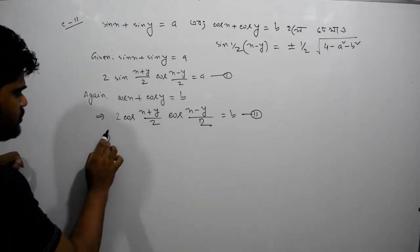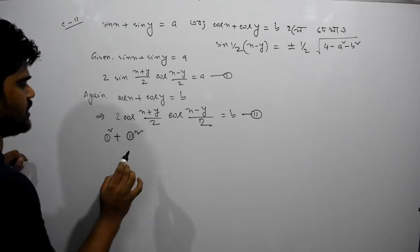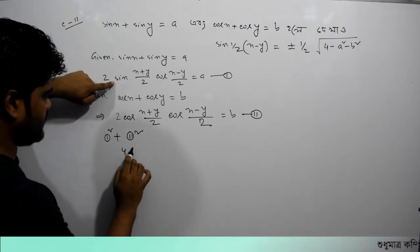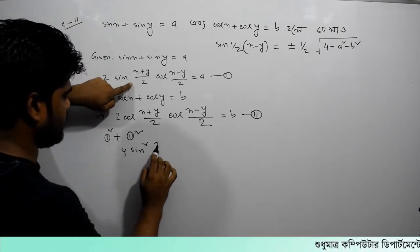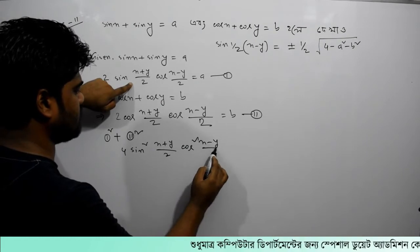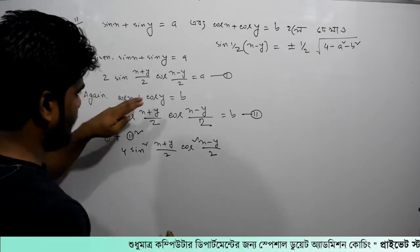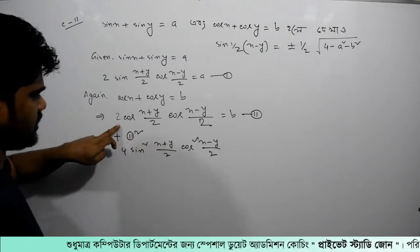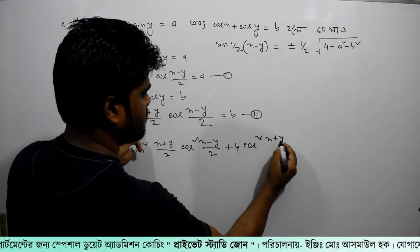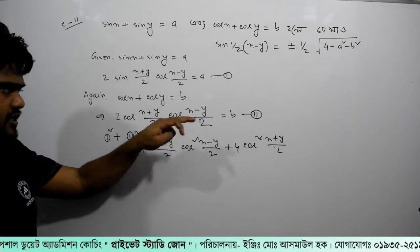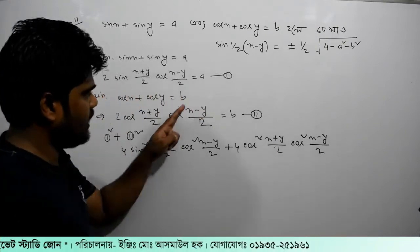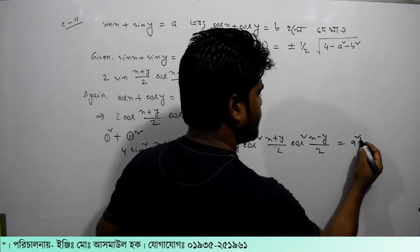Now squaring both sides — the whole square. We take a look at the whole square: (x-y)/2. Adding the squares, we get: 4 cos²((x+y)/2) and cos²((x-y)/2). Adding the squares on the right side gives a² plus b².